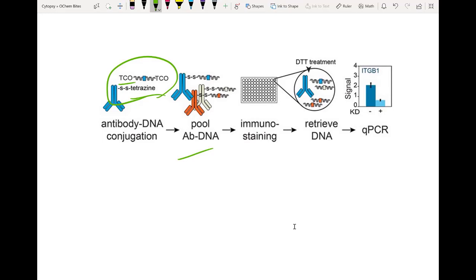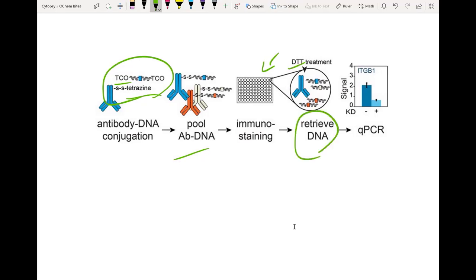Once the conjugates are created you can use the antibodies to detect something using immunostaining, and then via DTT you can break those disulfide bonds, retrieve the DNA and then run qPCR.